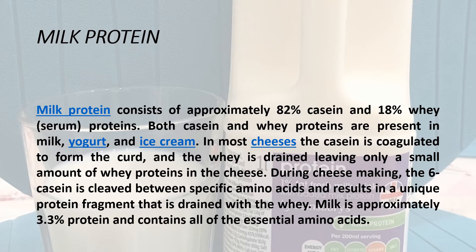Next is milk protein. Milk protein consists of approximately 82% casein and 18% whey protein. Both casein and whey proteins are present in milk, yogurt and ice cream. There are two types of proteins generally present in milk: casein and whey. In most cheeses, the casein is coagulated to form the curd and the whey is drained, leaving only a small amount of whey protein in the cheese. During cheesemaking, the κ-casein is cleaved between specific amino acids and results in a unique protein fragment that is drained with the whey. Milk is approximately 3.3% protein and contains all the essential amino acids, which are very essential for our body.